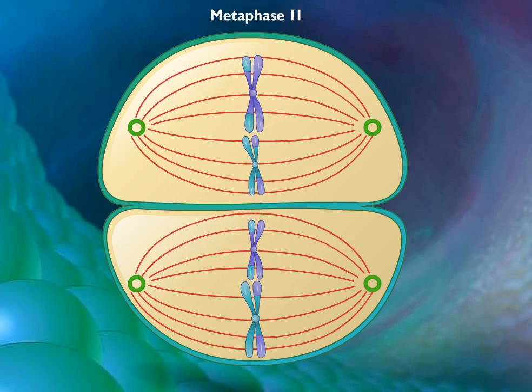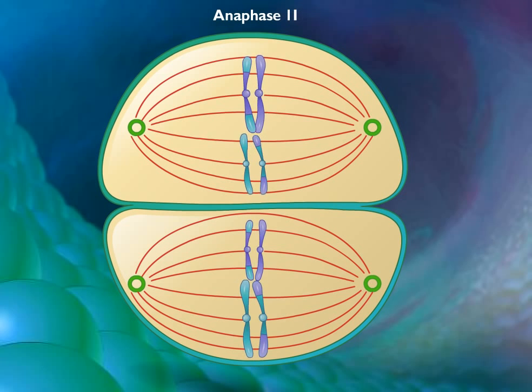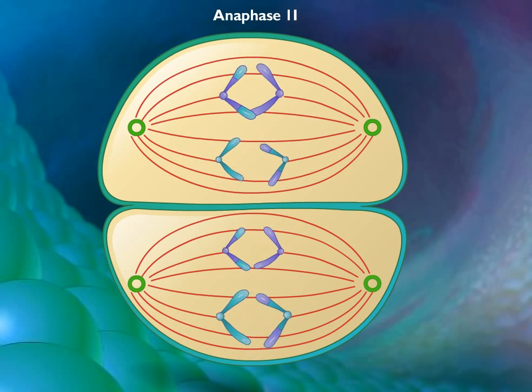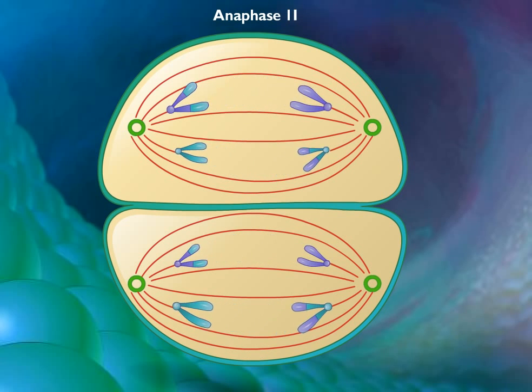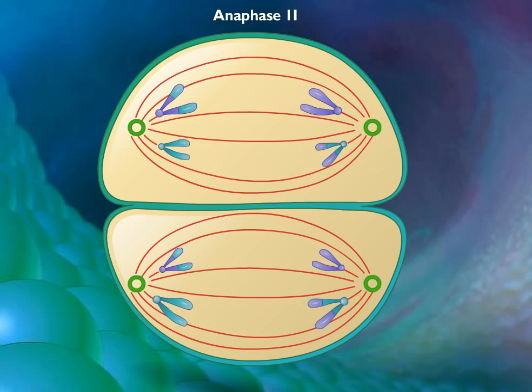During anaphase II, the spindle fibers contract and the sister chromatids move toward opposite poles. In telophase II, nuclear envelopes re-form around the sets of daughter chromosomes.